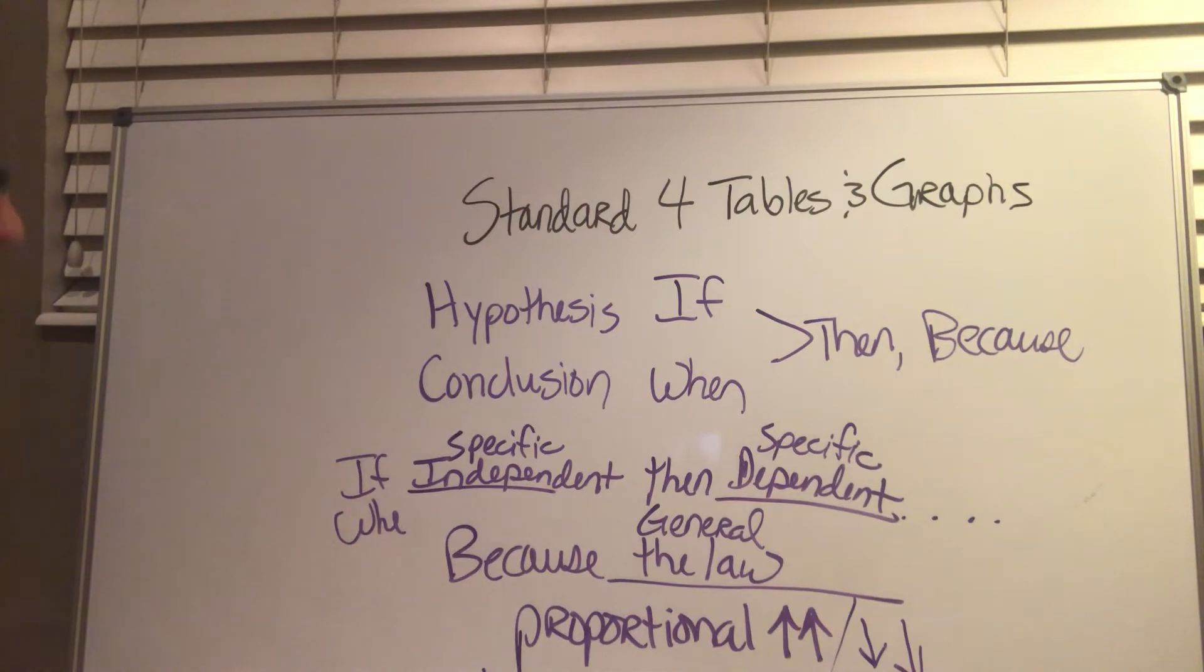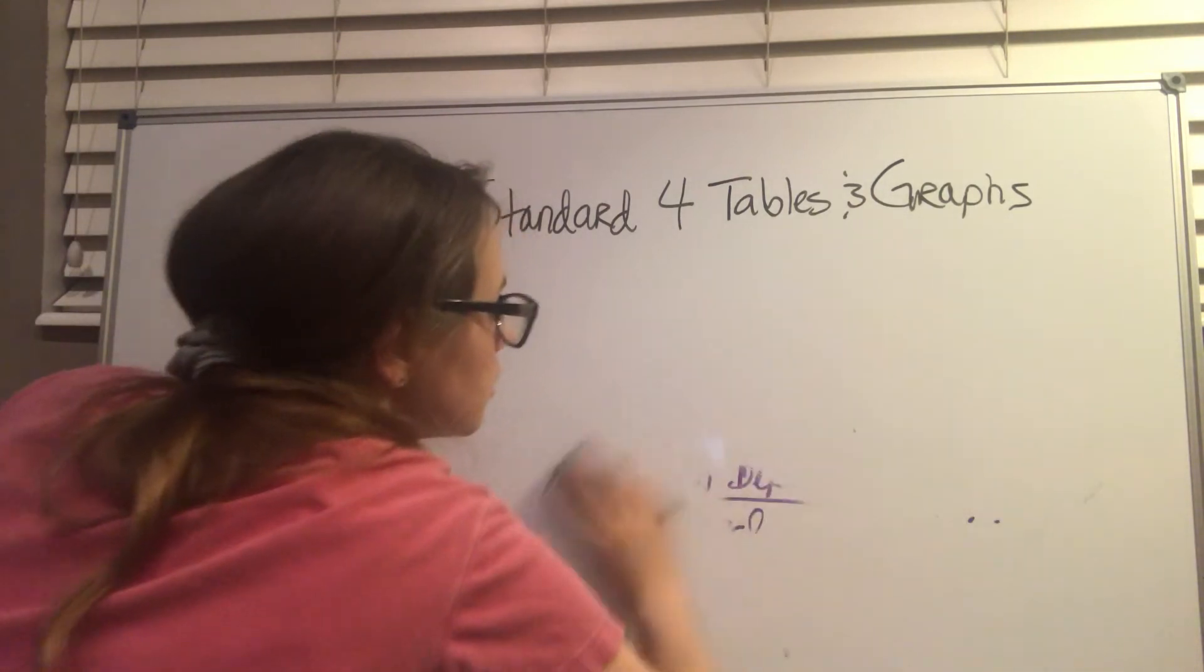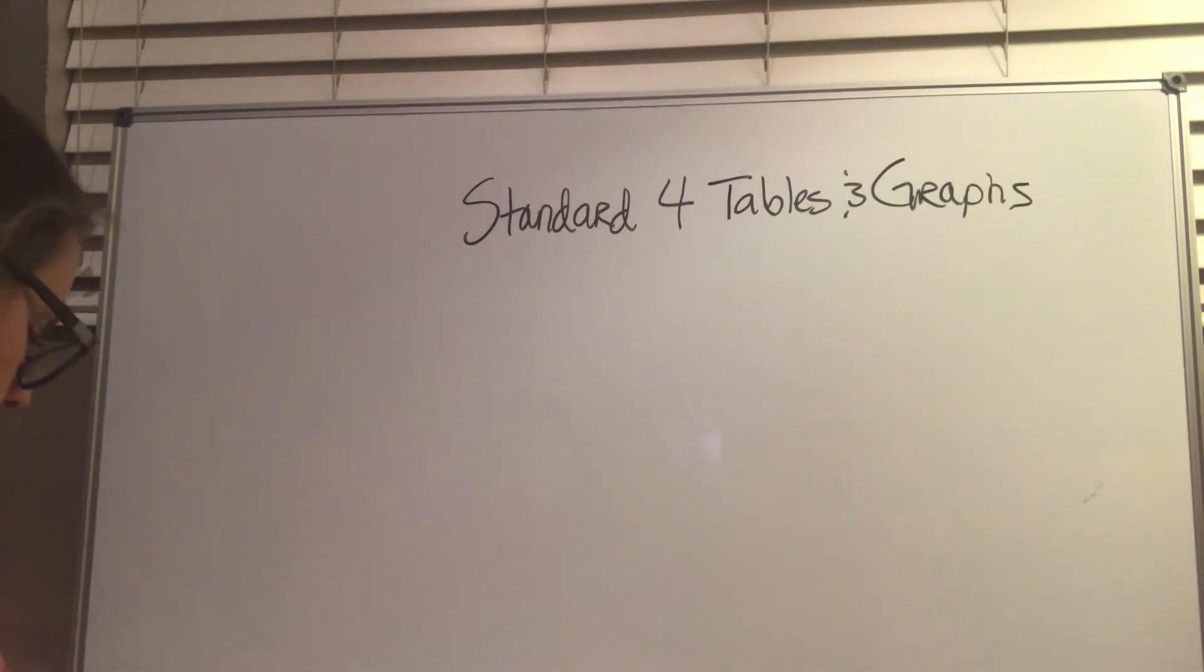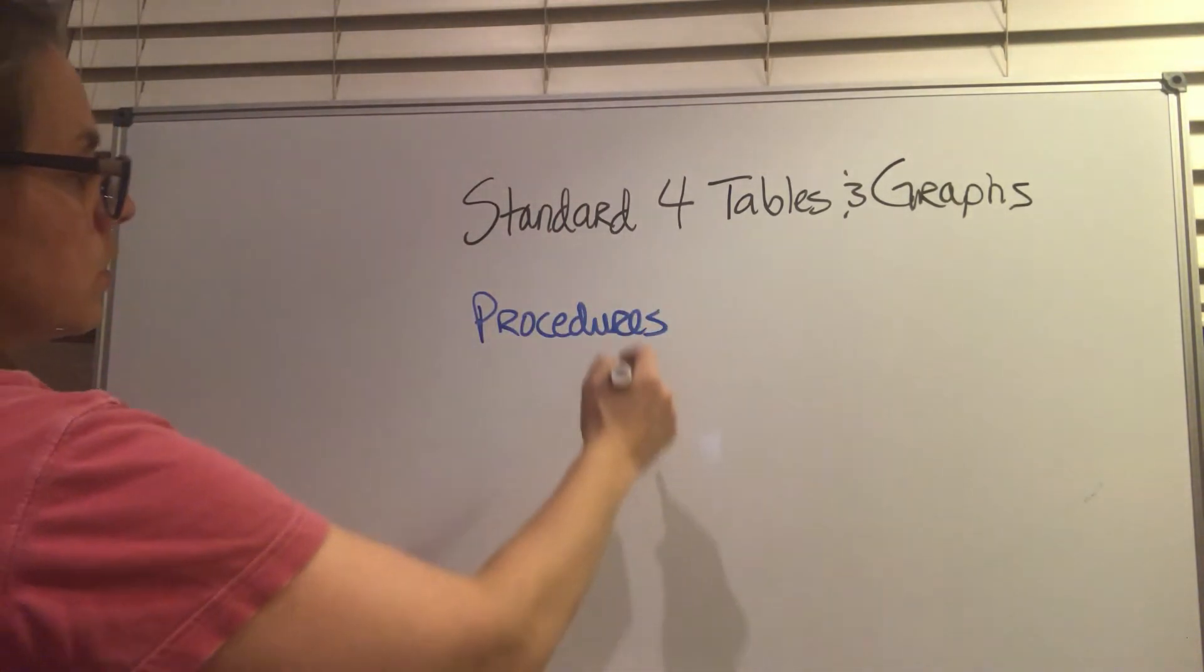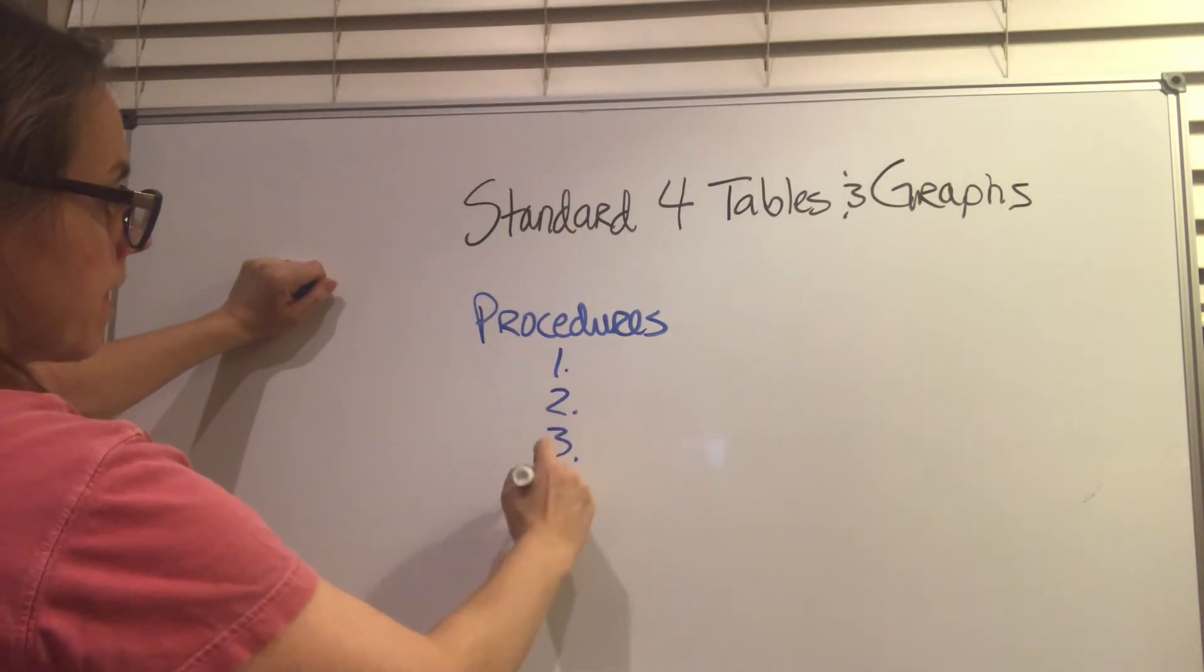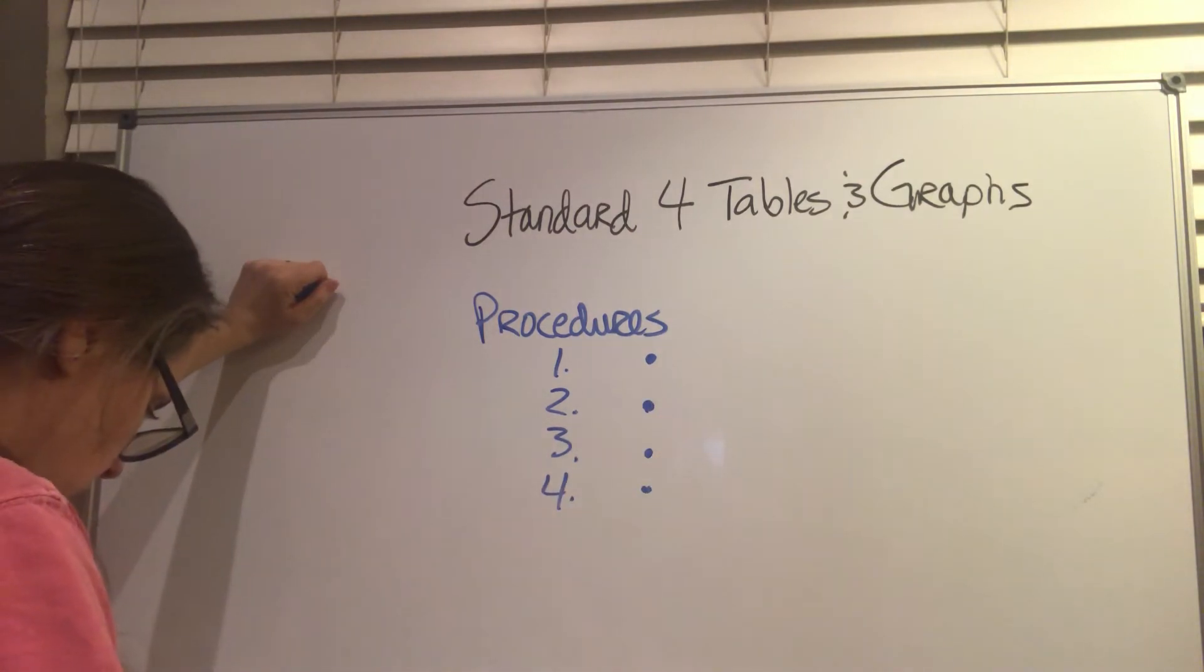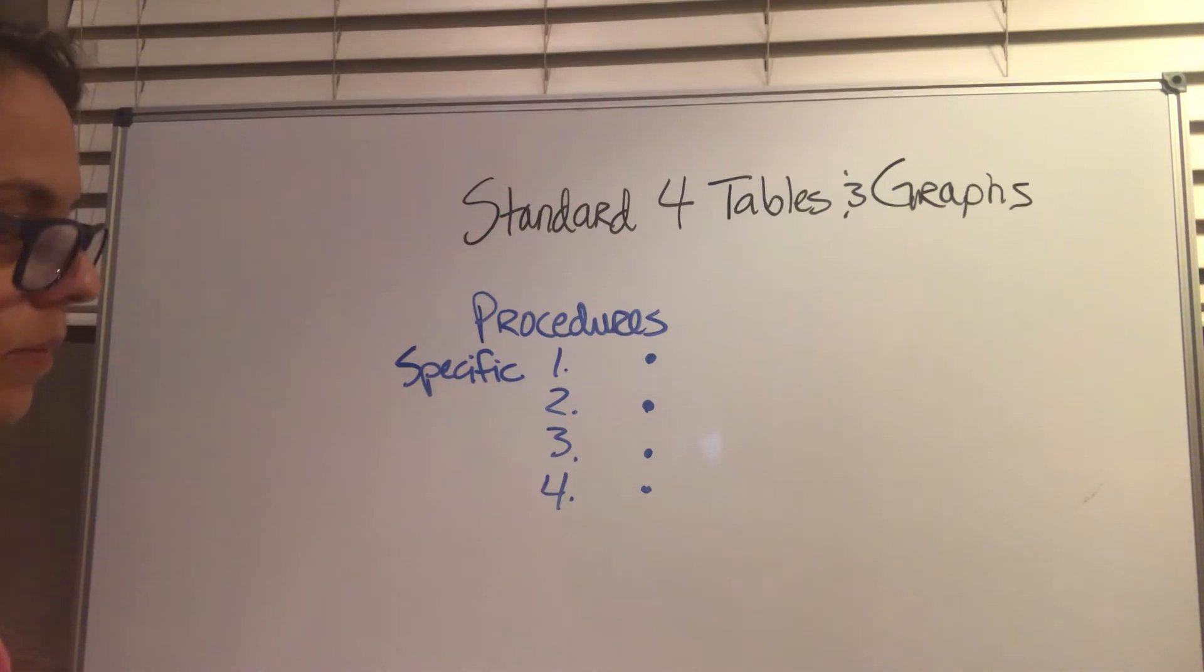We're going to keep going. There's a few little things in regards to those experiments that we've been learning all year long. And that is like your procedures. You just, you usually need to just number them or at least put bullet points next to them. And you need to be specific with them. Like you're giving the directions for a recipe to somebody who's never made it before.